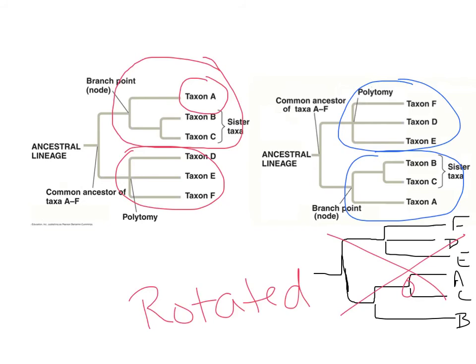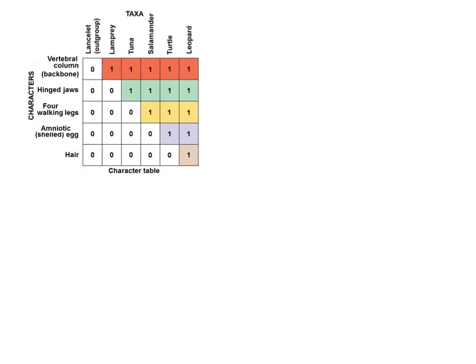We're going to look at an example of how to build a phylogenic tree. What we have here is a character table, which is very helpful for building these relationships. This particular one is based on morphology — physical characteristics, not amino acid sequences or proteins. The lancelet is going to be my outgroup. This chart is arranged so all the characters go in order of who has it and who does not.